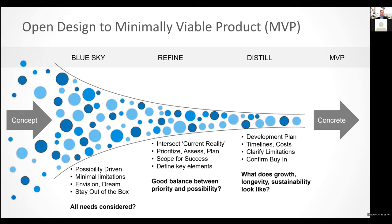Going from a refinement stage into distillation, you form a more concrete development plan with timelines and costs. You clarify the limitations — 'we will do X, we're not going to do Y yet, or we'll get to Y in a certain period of time' — and you confirm full buy-in from up and down the stakeholder chain. Management buys in, users buy in, communities buy in. People commit to engaging and adopting early on, even before you have the minimally viable product in place. Ask yourself: what does growth, longevity, and sustainability look like in a platform?